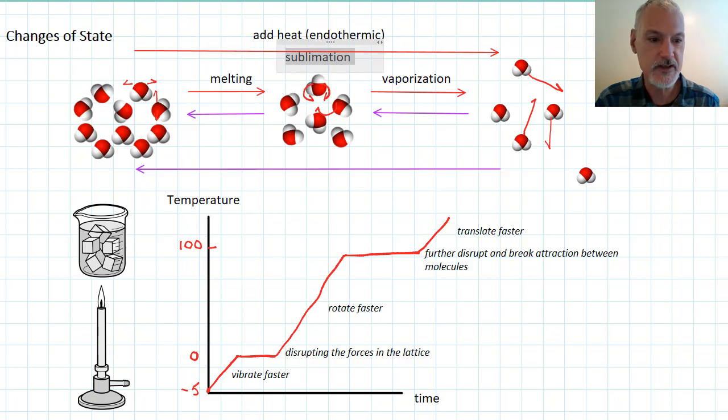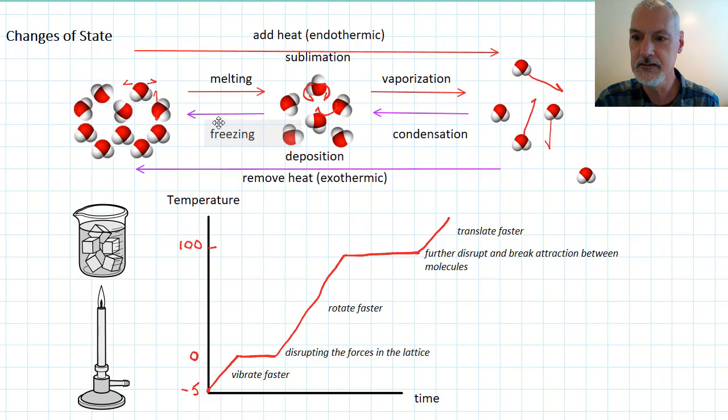Going in the other direction, we need to remove heat. We call those processes where heat is removed exothermic processes, where heat is given off in the process. And just to finish up naming some of these processes, to go directly from a gas, directly over to my solid, we call it deposition. To go from our gas to our liquid, condensation. And finally, to go from our liquid to our solid, freezing.